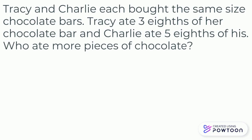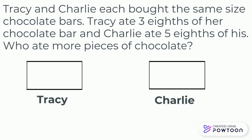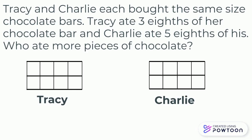Let's solve this problem by drawing a model to represent the chocolate bars. First, draw two rectangles. Then, partition them both into eight equal pieces. Next, we will shade in the amount of chocolate pieces each person ate. Tracy ate three-eighths, and Charlie ate five-eighths.